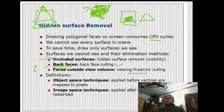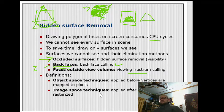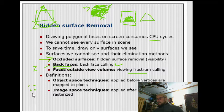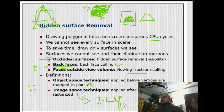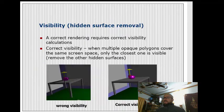There are two broad techniques: object space technique and image space technique. Object space technique is applied before vertices are mapped to pixels. Image space techniques are applied after vertices have been rasterized — after you have created the pixels for that image. Backface culling is the object space technique, and the Z-buffer algorithm is the image space technique.